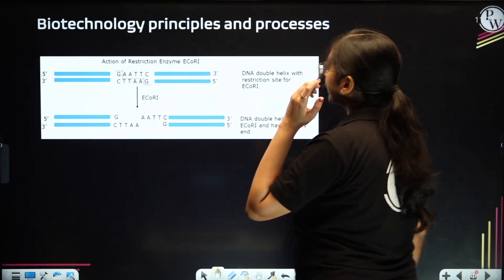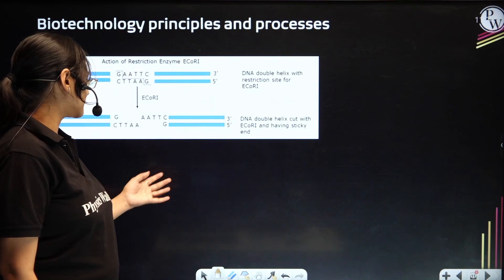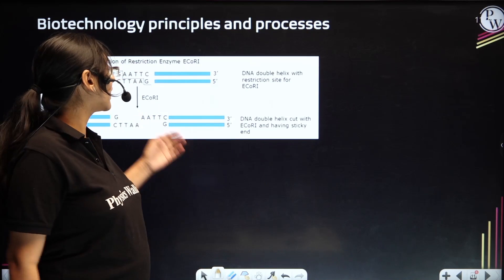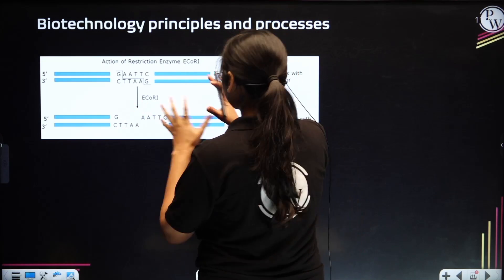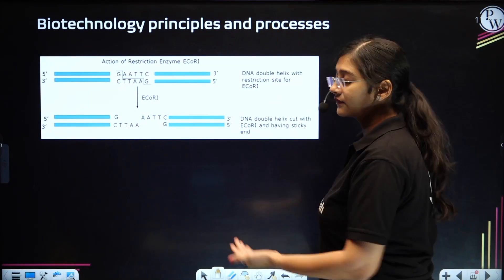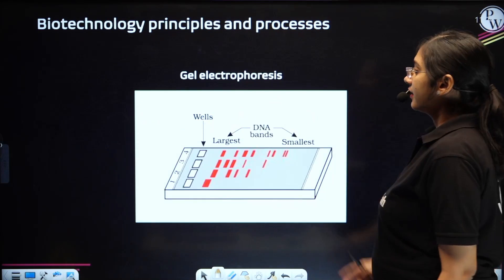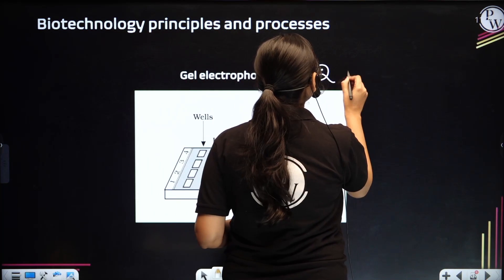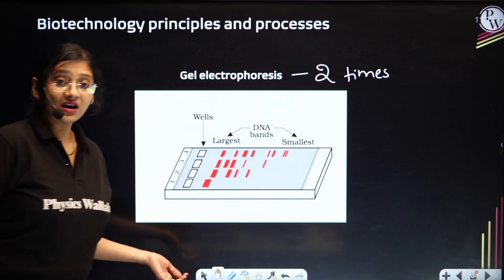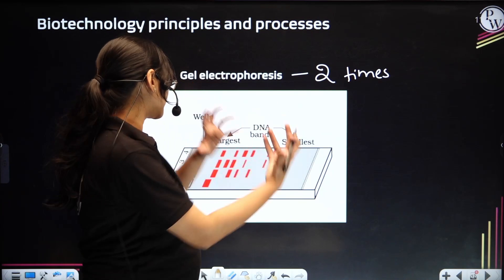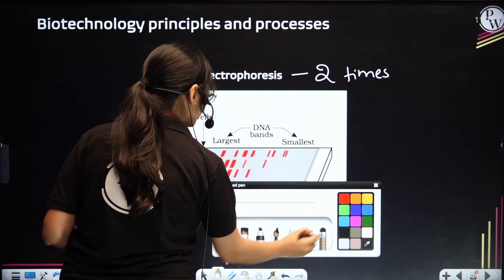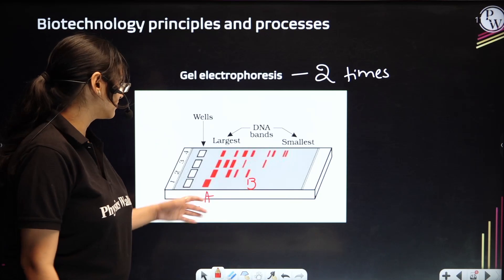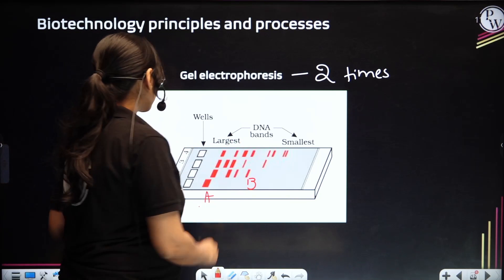Next chapter: biotechnology principles and processes. This is not really a diagram diagram — it's just the process of how exactly the restriction enzyme EcoRI is going to act. Not just this, but whatever similar diagrams or processes have been given, you have to study them definitely. The agarose gel electrophoresis diagram has been asked two to three times, and it can be asked once again — or they can ask questions from this image, such as given bands labeled A and B, which is digested and which is not digested, and so on. So this particular image is very important, along with its process.